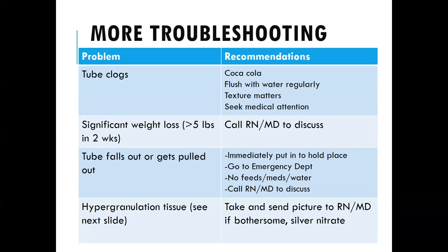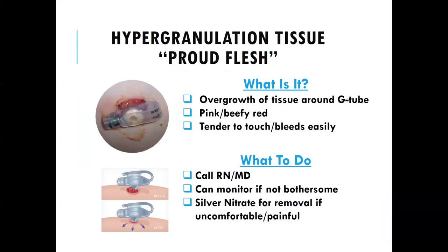Hypergranulation tissue — also called proud flesh — can occur as the site heals. It's an overgrowth of tissue around the G-tube that looks pink and beefy red, is very vascular, can be a little painful, and bleeds easily even with light cleaning. If it's not bothersome, you can monitor it over time. If it is painful or uncomfortable, let us know — treatment with silver nitrate, similar to wart removal and typically done through interventional radiology, can help get rid of that tissue.